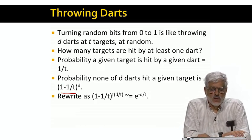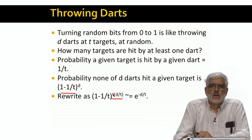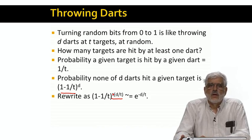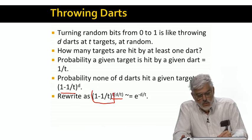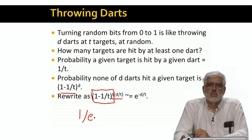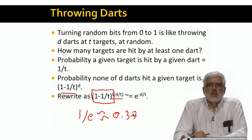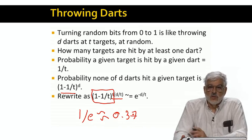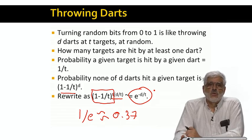I'm going to rewrite the power d as t times d over t. Obviously, that's just another way of writing d. But the reason I want to do that is that this part, the 1 minus 1 over t, all raised to the tth power, has a well-known approximation as long as t is large. It is 1 over e, the base of natural logarithms. 1 over e is about 0.37. In this case, t is certainly large, since it is the number of bits in the array. And there's a very good approximation to the fraction of zeros that remain, is e to the minus d over t. I write it this way, since 1 over e is the same as e to the minus 1.